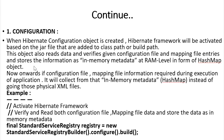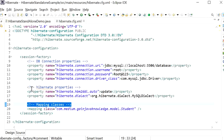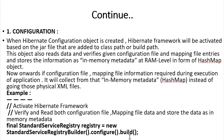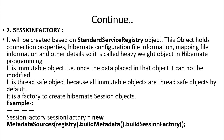So next time if we need to read the configuration file, it will get the information from in-memory metadata and not read it again and again. To activate the Hibernate framework, we use a StandardServiceRegistry object and call the configure() method. If we are not passing any file name, it will automatically read hibernate.cfg.xml. If we have created a file with any other name, we just need to define that name, then build it.